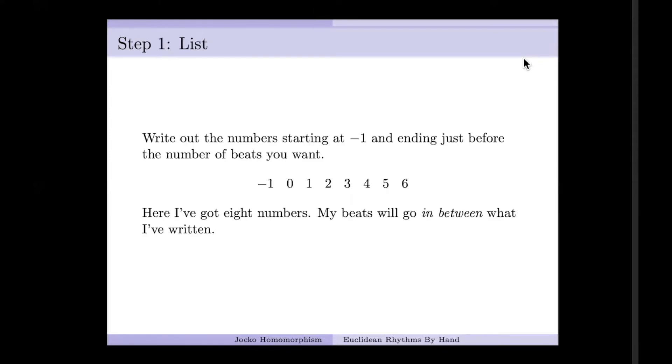The first step is we're just going to write out numbers in order. Looks a little funny. We're going to start at minus one, and we're going to keep going until we get to just before the total number of beats in the measure. So I'm going to go minus one, zero, one, two, three, four, five, six, and I stop. So even though my bar is supposed to be seven beats long, I've got eight numbers here. That's okay because I want the seven spaces that are in between these numbers. We'll see that in the next couple steps.